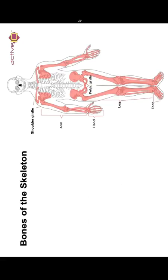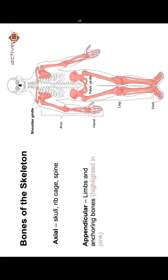Bones of the skeleton — what are we looking at? We've got the shoulder girdle at the top, we've got the arms, the hands, the pelvic girdle, and the legs and feet. When we're looking at the axial skeleton, it is the skull, the ribcage, and the spine. The appendicular are the limbs, and the anchoring bones are highlighted in pink as you can see.